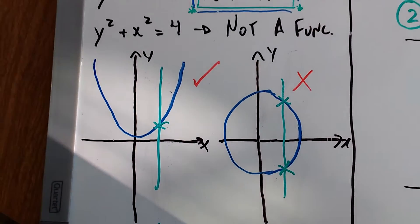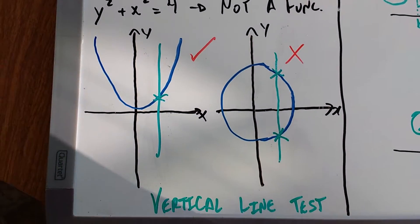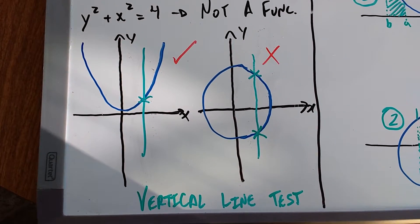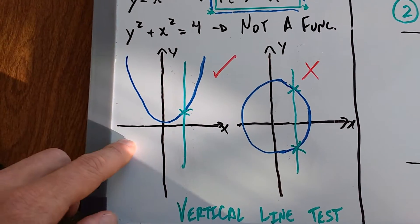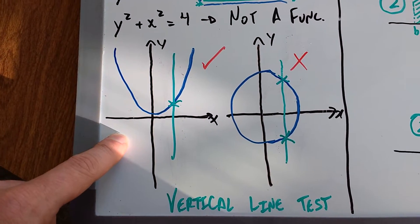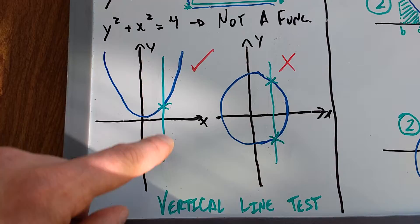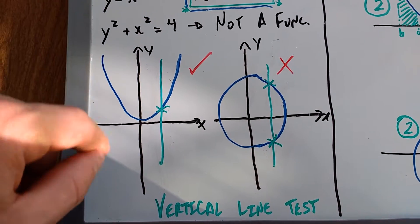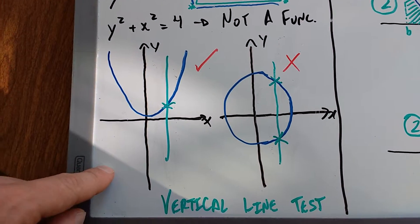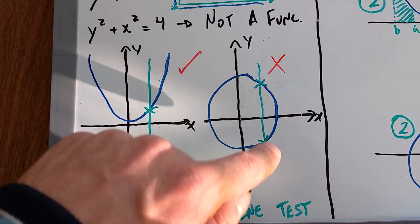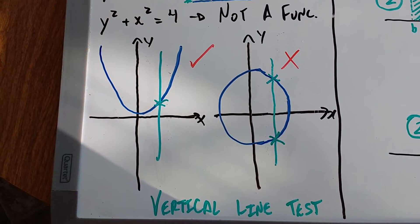And so we learned about how to tell whether something is a function or not, whether a relation is a function or not. Here we see the parabola is a function because it passes the vertical line test. So if you draw a line and it cuts through the function in one spot only, then it is a function. And if you draw a line and it goes through the function at two places, then it is not a function.